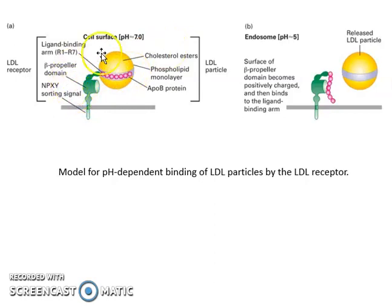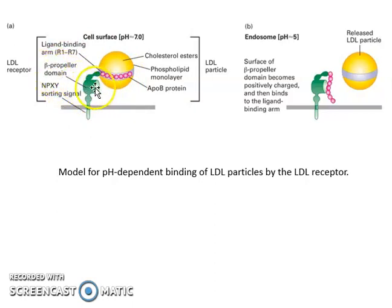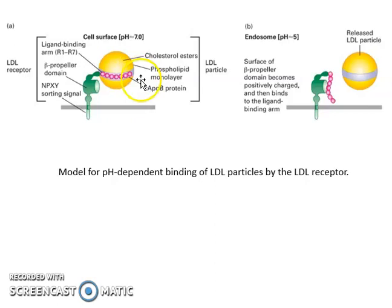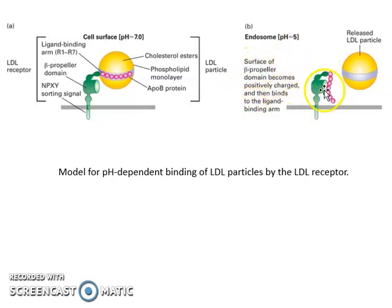Next, we will see how pH affects the binding and dissociation of the LDL receptor to the LDL particle. At the cell surface, the pH is neutral at 7.0. The LDL receptor has several domains: a beta-propeller domain, a cytosolic domain with the NPXY sorting signal, and the ligand-binding arm — the pink region. When the LDL receptor and LDL particle enter the endosome at acidic pH 5.0, the beta-propeller domain's histidine residues become protonated and positively charged.